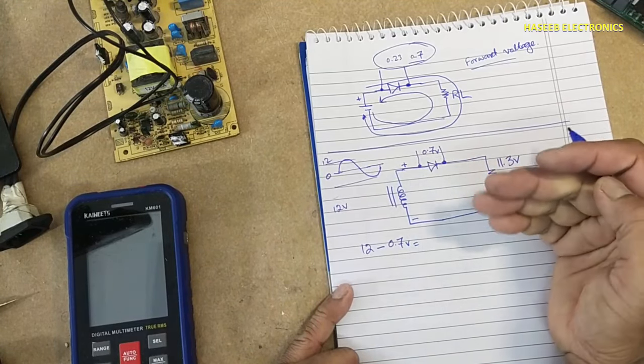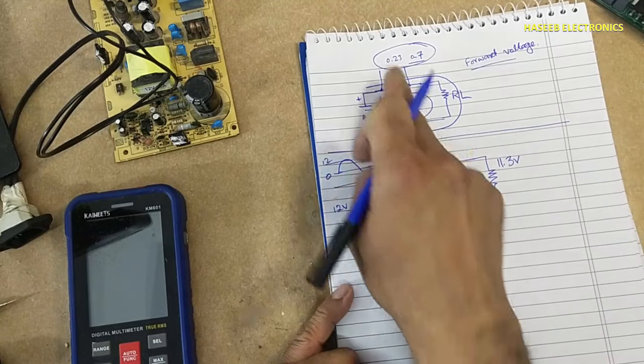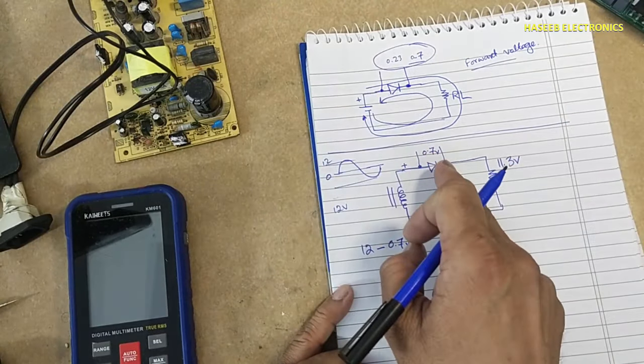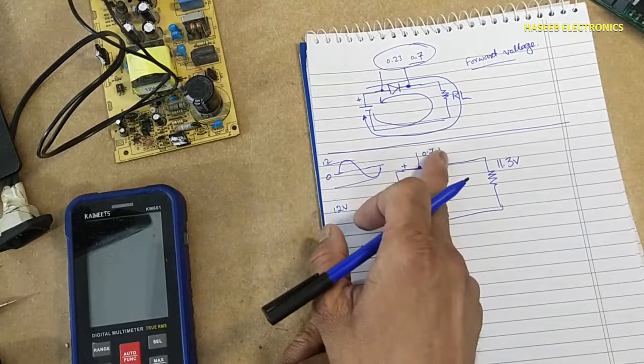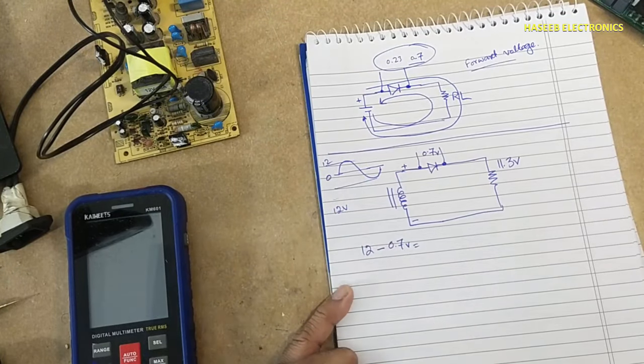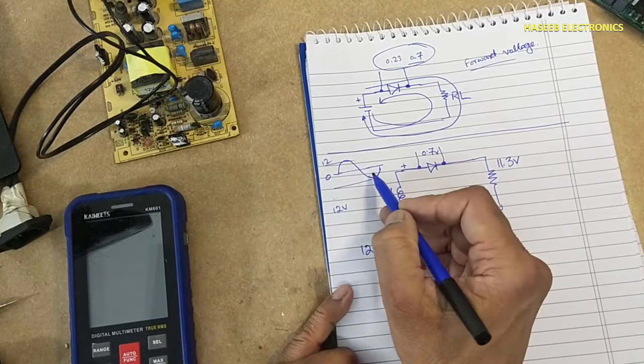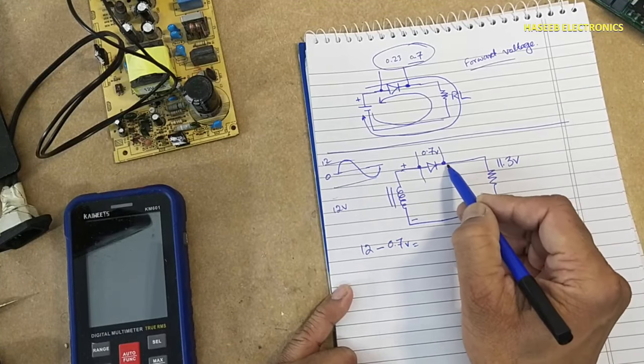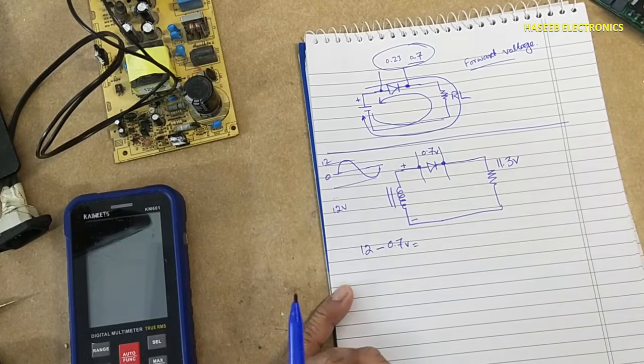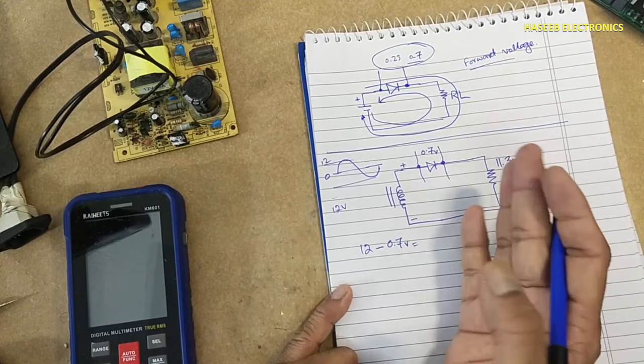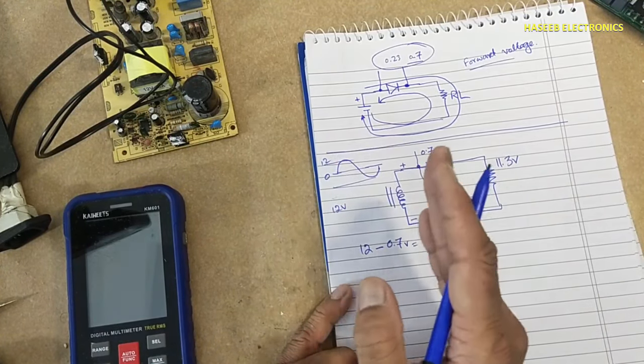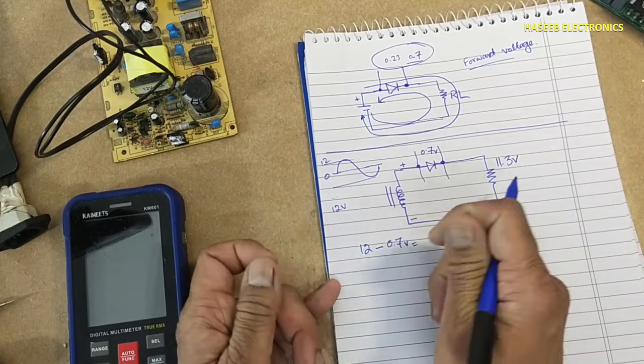Normally these voltages are neglected, but when we test it in DC circuit it will drop this voltage. When this negative peak will come, at that time it will behave like open circuit. Its internal resistance will increase. Why? Because its junction will reverse biased.